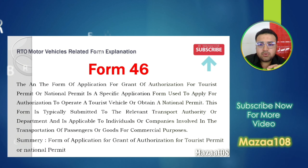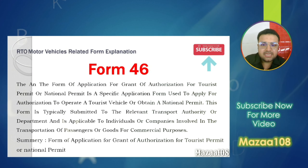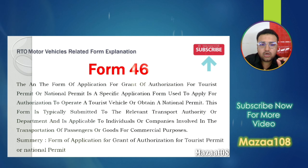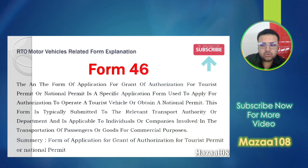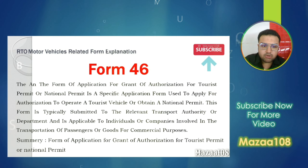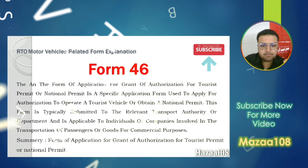Form 46 is an application for grant authorization for a tourist permit or a national permit. This form is used to apply for authorization to operate a tourist vehicle or obtain a national permit. It is typically submitted to the relevant transport authority or department and is applicable to individuals or companies involved in the transportation of passengers or goods for commercial purposes.